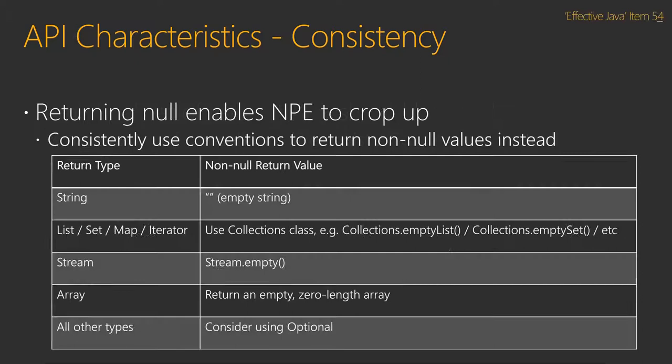Consider what we could return other than null. String can be an empty string. List, Set, Map, Iterator — we can use the Collections class to return Collections.emptyList(), emptySet(), and so on. Stream has Stream.empty(). Arrays can return an empty array. For all other types, you may want to consider using the Optional type added in JDK 8. The key point is trying to avoid surprising the user.